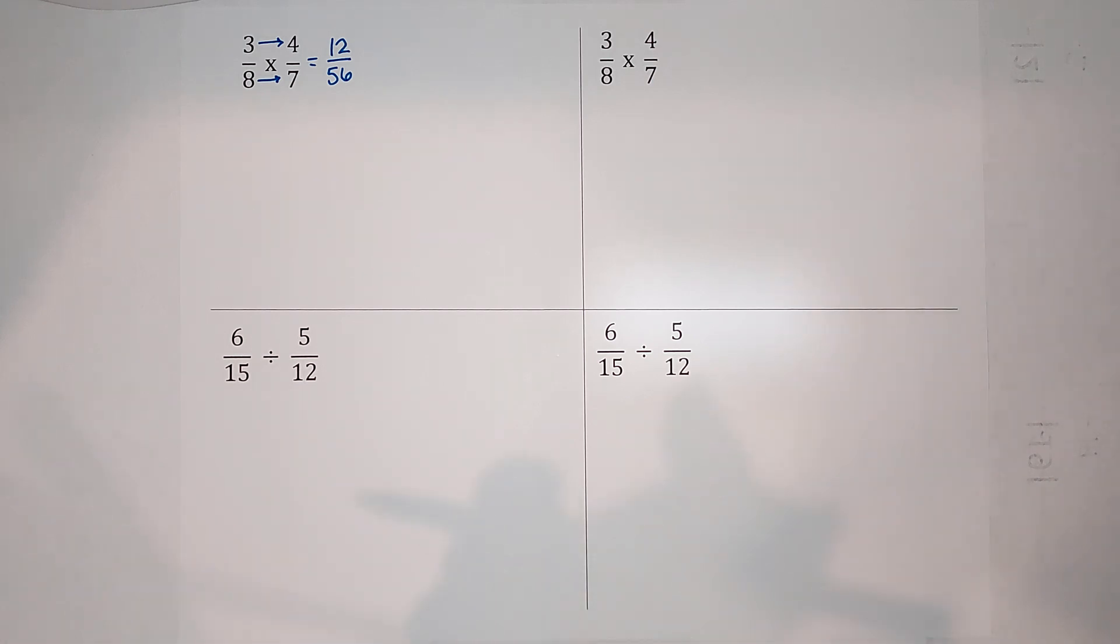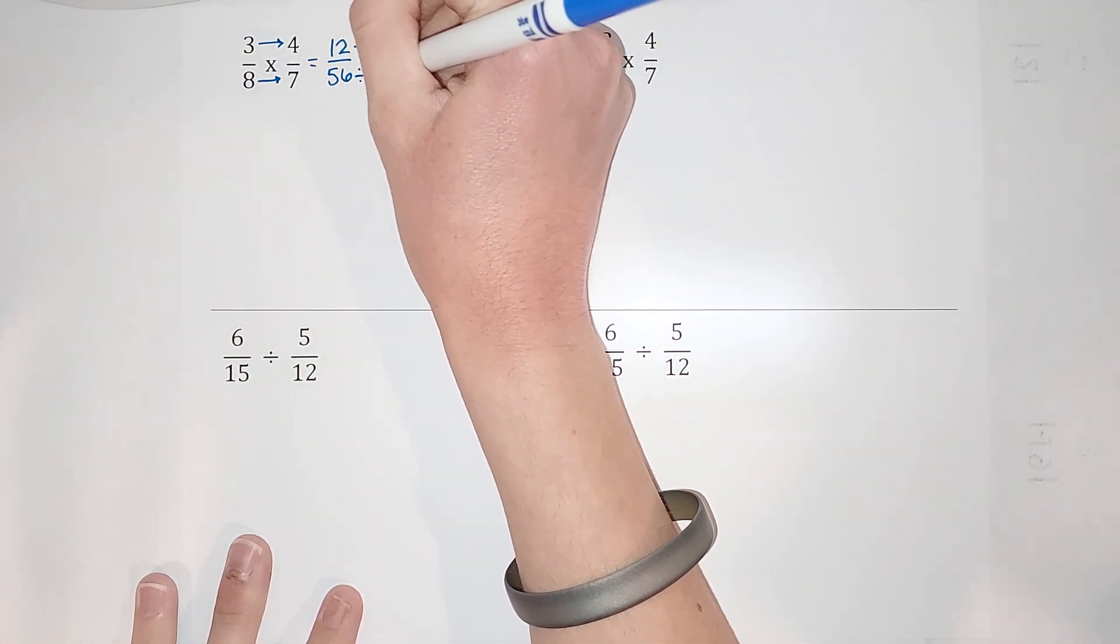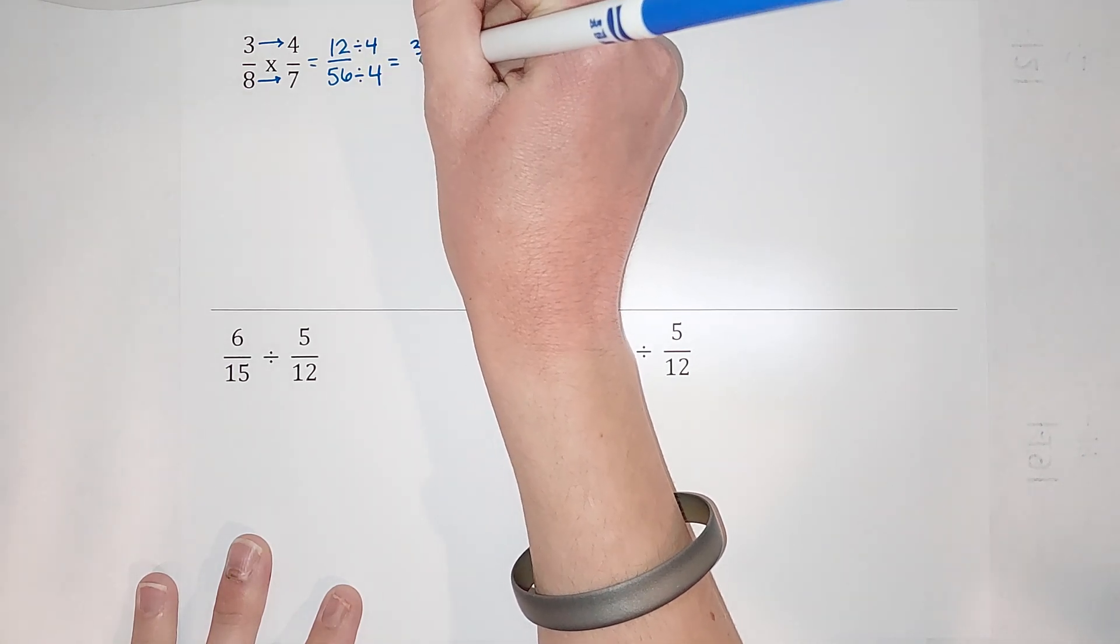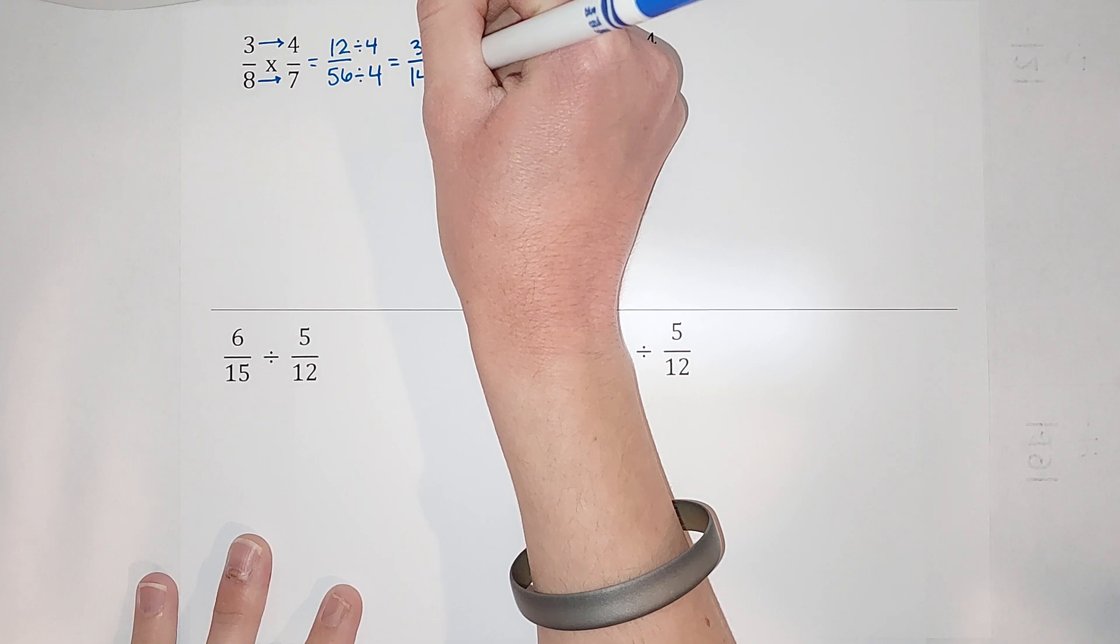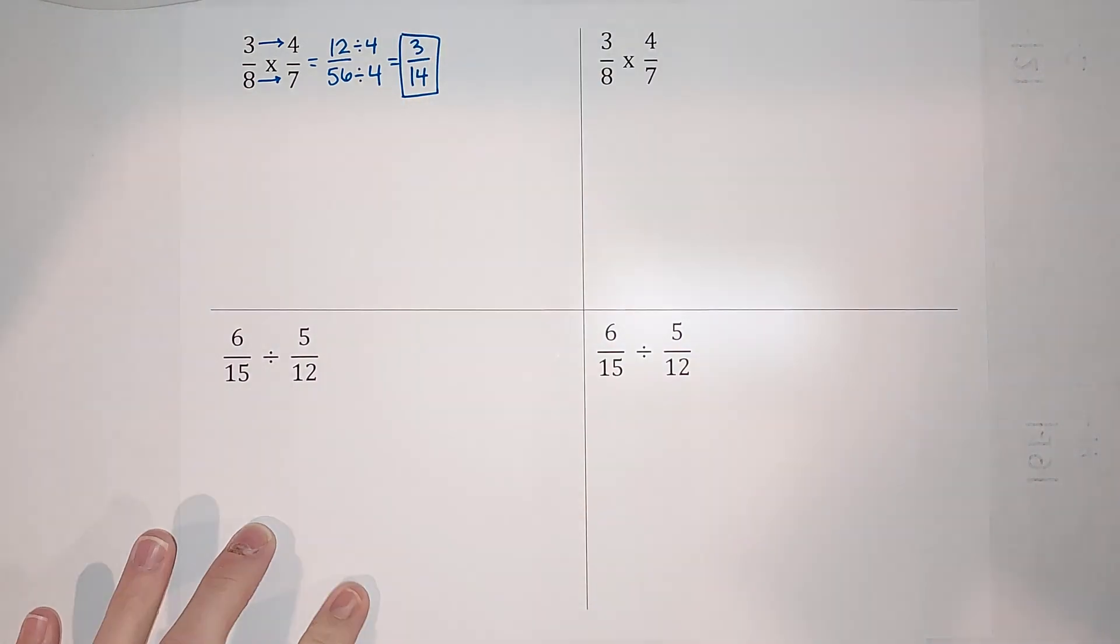Now we're going to simplify it. If you need a quick reminder on how to simplify fractions, I'll link a video. But I notice both 12 and 56 are divisible by 4, so I'm going to divide by 4 on top and bottom and I end up with 3 fourteenths. Done.